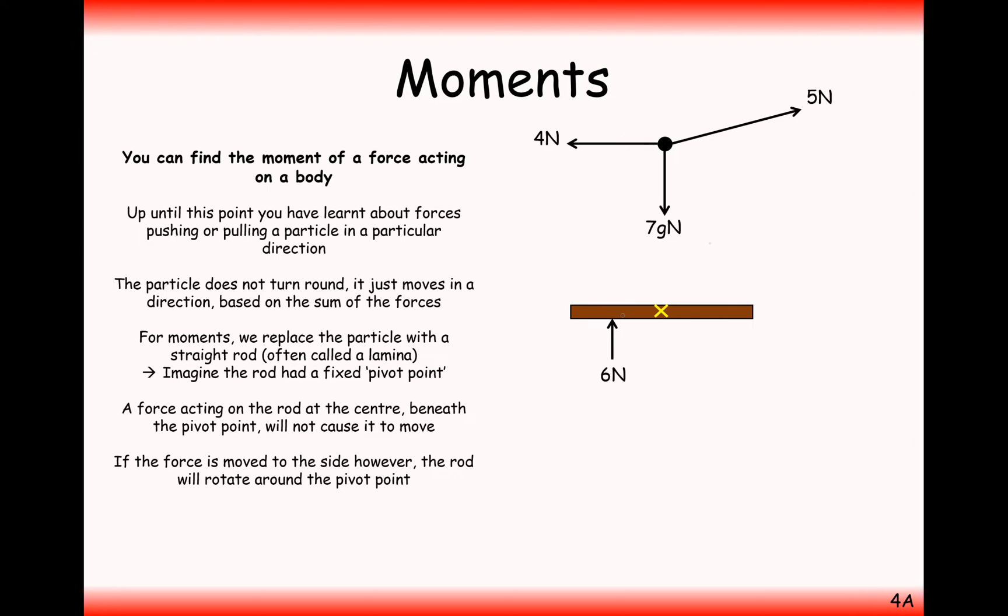Now how could we increase the spinniness of this balancing beam here? Well, number one, we could increase this force maybe to 16 newtons, that will increase the spinniness of this pivot point, of this beam. Or we could move the 6 newton force further out, and that will increase the spinniness of this beam around the fixed point as well.